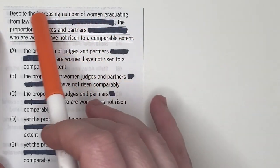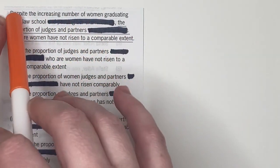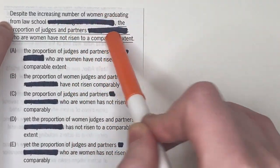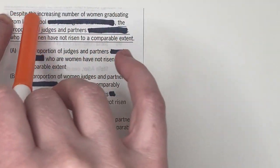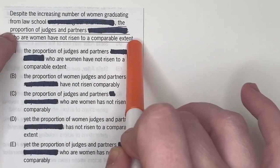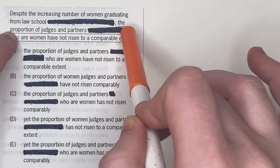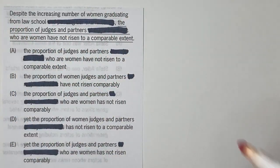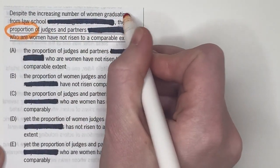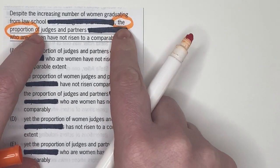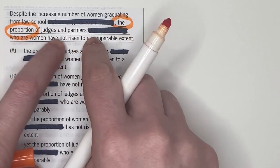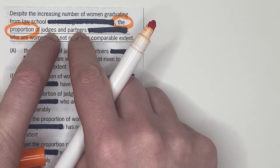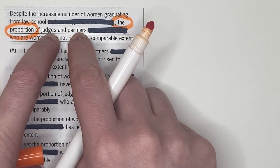So we start with a subordinate clause, right? Despite the increasing number of women graduating from law school, comma. All right. Well, that's obviously not a standalone sentence. It's dependent. So this is going to be our independent clause. So what's the subject of this? The proportion. All right. So the proportion is our subject. And how do I know that? How do I know it's not judges and partners that are the subject? Because judges and partners, those are nouns. So why couldn't those be the subject?